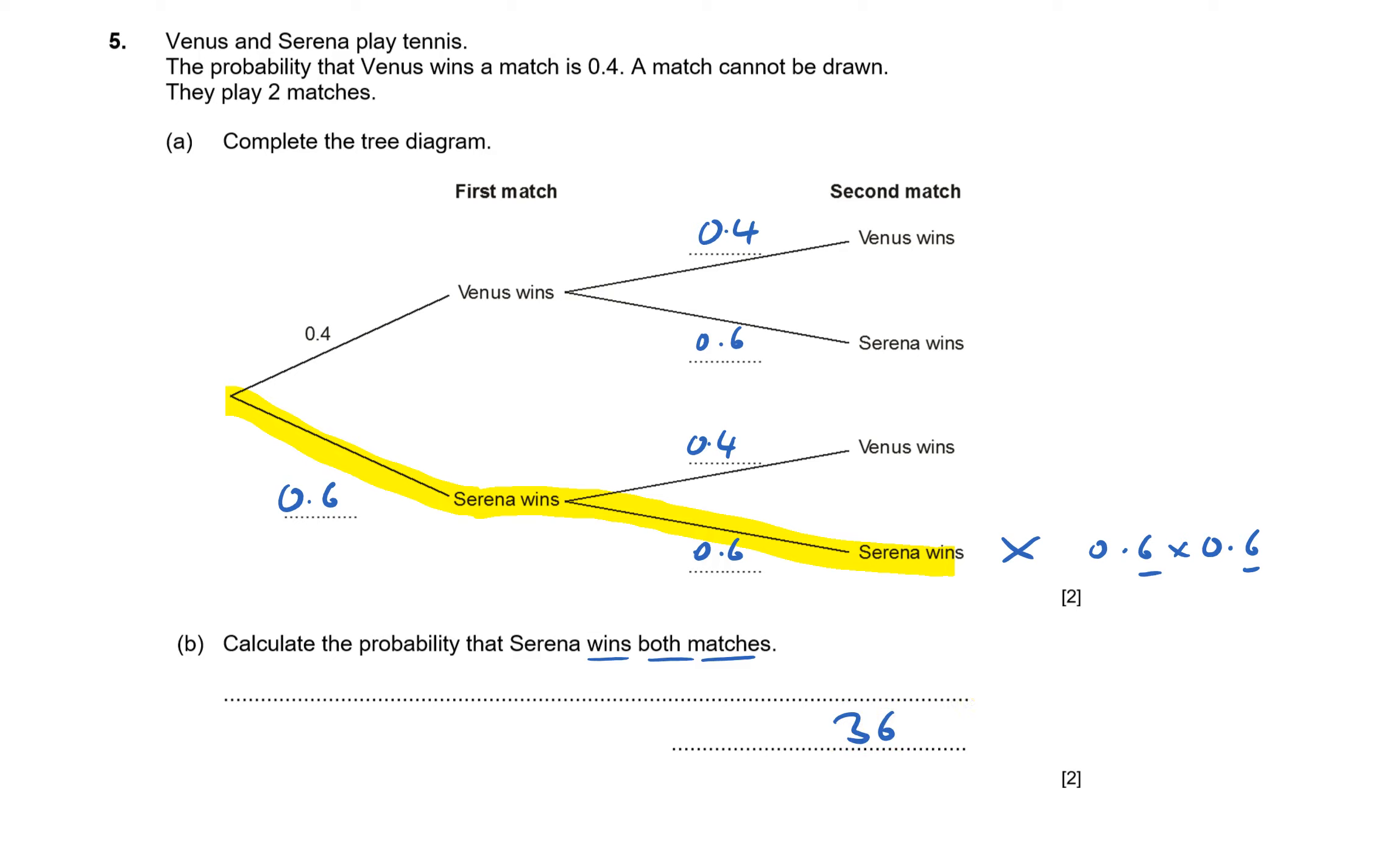And then this number here's got two numbers after the decimal place, so my answer must have two numbers after the decimal place, and so it'll be 0.36. And that's question five done.